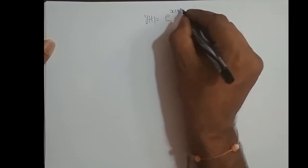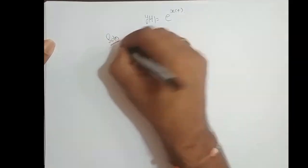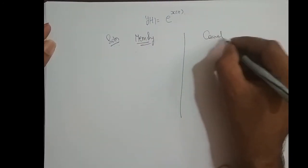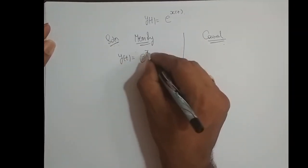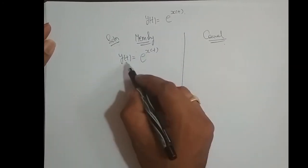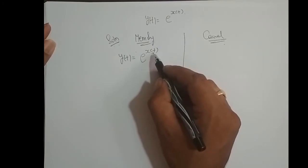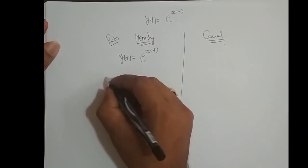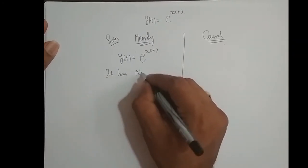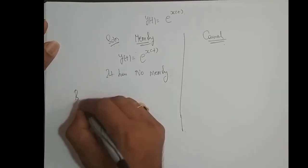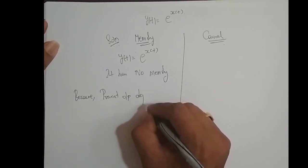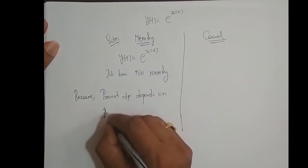Next example: y(t) = e^(x(t)). Checking for memory: if t = 0, y(0) = e^(x(0)); if t = 10, y(10) = e^(x(10)). Whatever value of t you put, the same value of t goes to the output. So present output depends upon present input value. Therefore, it has no memory, because present output depends on present input.